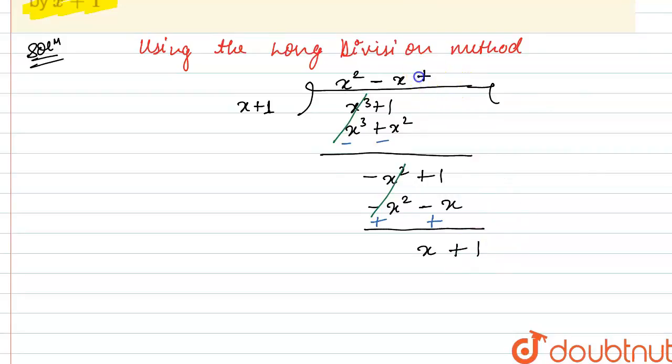Now I am going to take in the quotient only plus 1. So multiply x plus 1 with 1. So we will have x plus 1 and again we will change the sign. So this will become minus, this will become minus. So this plus x and minus x will cancel each other and plus 1 and minus 1 will cancel each other.